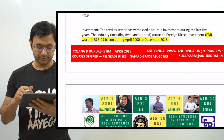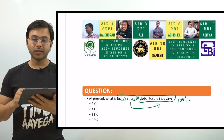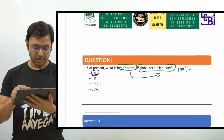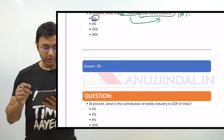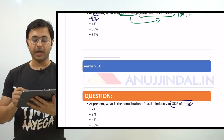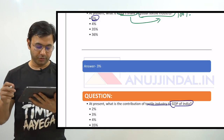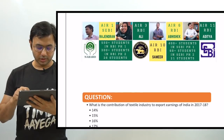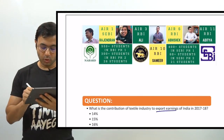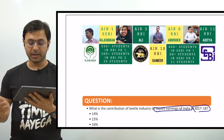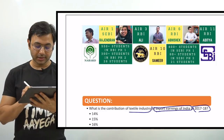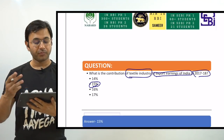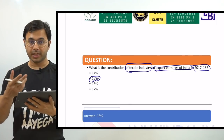Questions can be framed directly or indirectly from these facts. Coming back to the first question — India's share in the global textile industry — the answer is 3%. The second question asks the contribution of the textile industry to India's GDP, which is 2%. The third question asks the contribution of the textile industry to India's export earnings in 2017-18, and the answer is 15%.